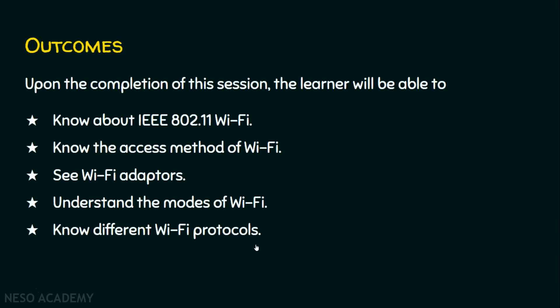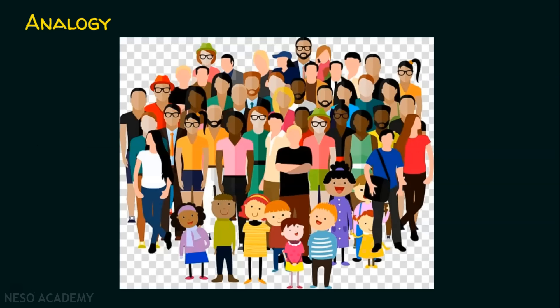Before we step into the topic, we will see an analogy. Let's assume he is John and she is Jenny, and they are in a group. If John and Jenny are talking to each other, will others hear this conversation? The answer is yes — those who are in the coverage range of John and Jenny can hear the conversation, because John and Jenny are not the only participants in the group. Others can hear the speech signals of John and Jenny, but they normally ignore this conversation because it is not intended for them.